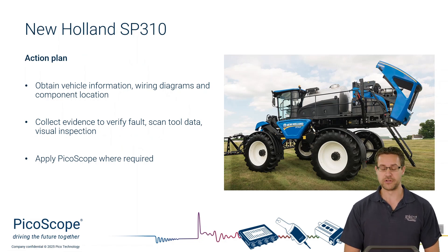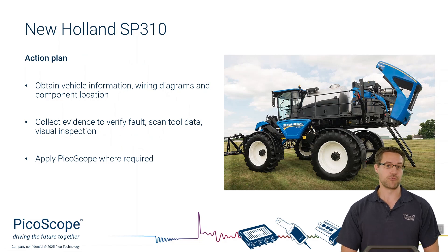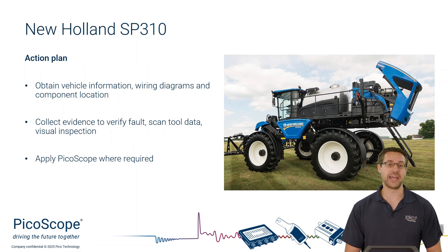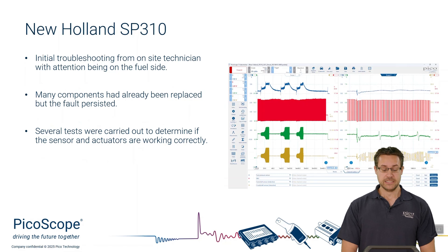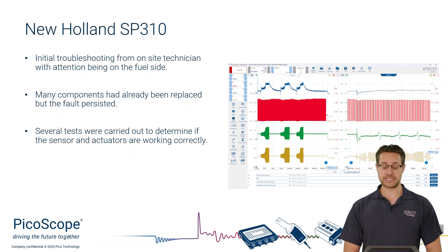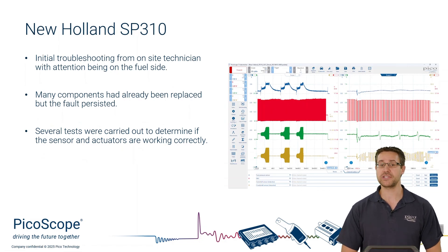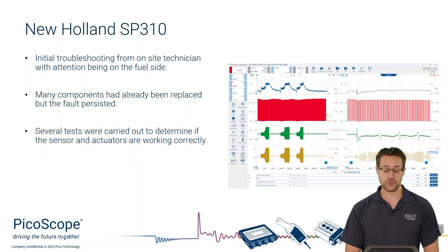Once we've gone through all of that, we need to think about how we can apply PicoScope in the most non-intrusive way possible. This is a guest case study from one of our customers in North America who very kindly shared it with us. Initial troubleshooting came from an on-site technician who had been through a number of different things to try and rectify this. They started focusing mainly on the fuel side of the system — some components had already been replaced, yet the fault still persisted. At what point do you say we need to make measurements before replacing any more components?